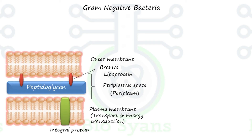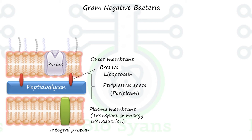The outer membrane is more permeable because there are porins, which are channels for low molecular weight molecules. The outer membrane has lipid and polysaccharide linked to form lipopolysaccharide, which is called LPS.